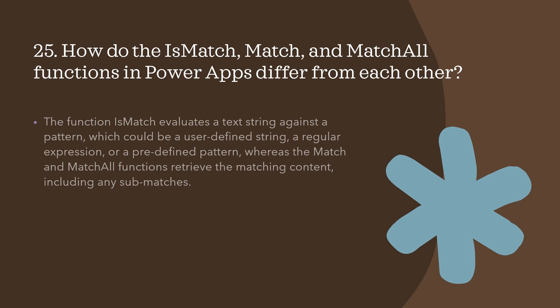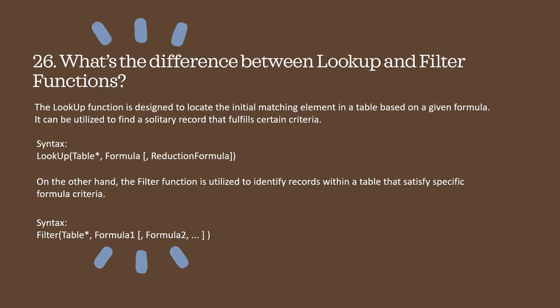Question 25: how do IsMatch, Match, and MatchAll functions in Power Apps differ? The IsMatch function evaluates a text string against a pattern, which could be a user-defined string, a regular expression, or a predefined pattern. Match and MatchAll retrieve the matching content including any submatches. Question 26: what's the difference between Lookup and Filter? The Lookup function locates the initial matching element in a table based on a given formula, finding a single record that fulfills certain criteria. The Filter function identifies all records within a table that satisfy specific formula criteria.